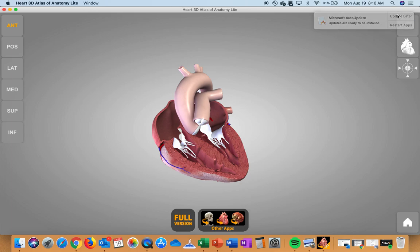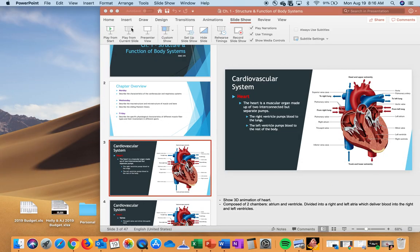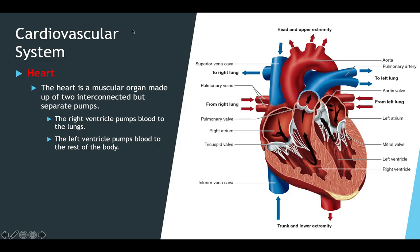To recap: the heart is a muscular organ with two interconnected pumps and four different chambers. The right ventricle pumps blood into the lungs; the left ventricle pumps blood into the rest of the body. Blue represents deoxygenated blood and red represents oxygenated blood. Blood comes in through the right atrium into the right ventricle, out to the lungs to receive oxygen, then back in through the left atrium into the left ventricle, and out to the rest of the body to deliver oxygen-rich blood — during strength training, specifically to the working muscle group.